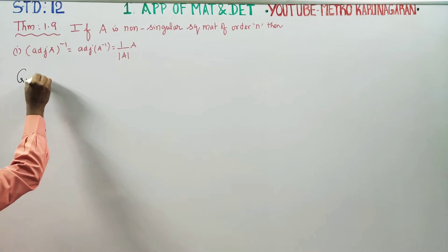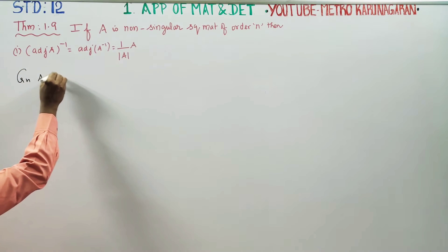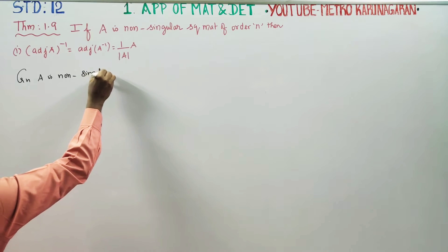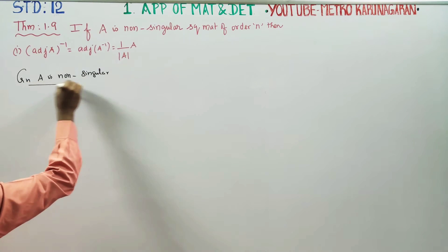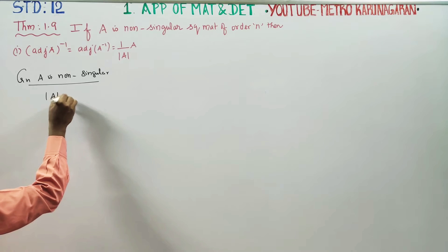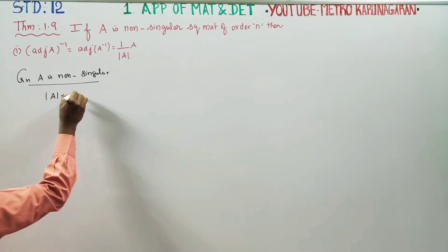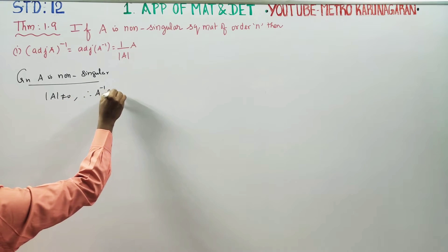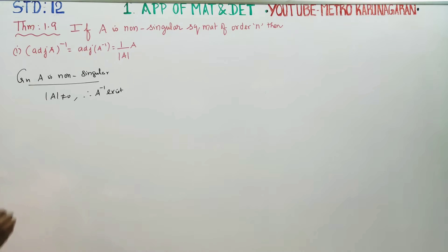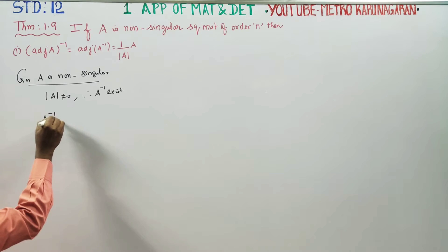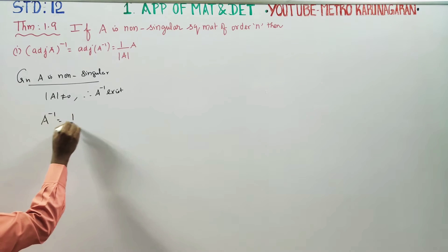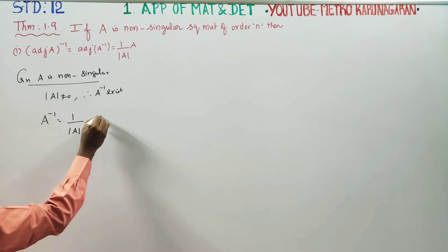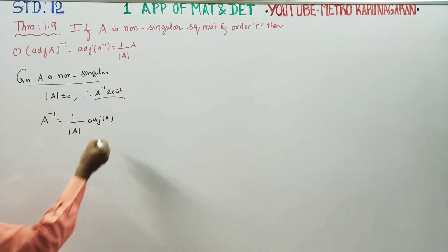Given: A is non-singular, which means the determinant of A is not equal to 0. Therefore, A inverse exists. A inverse is equal to 1 by determinant A, into adjoint A. A inverse exists in this form, and we can use this form.